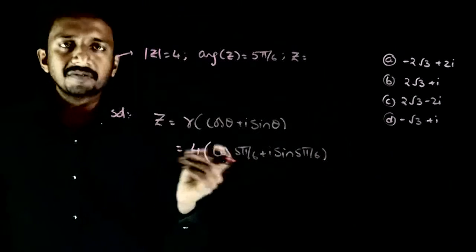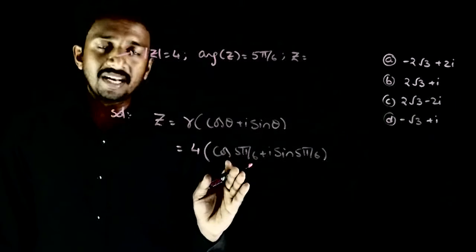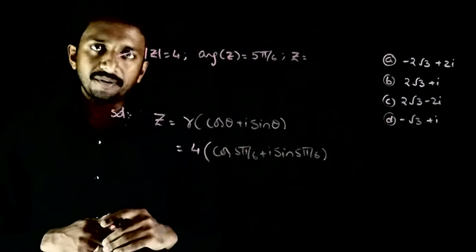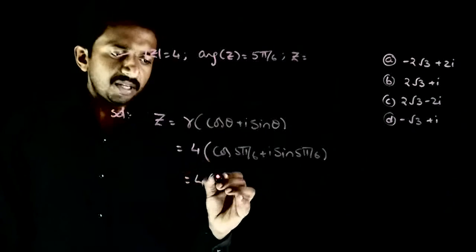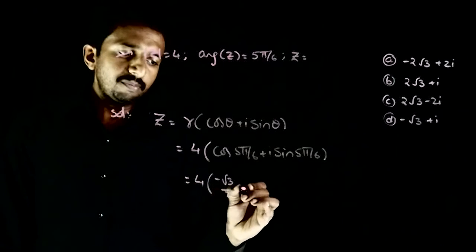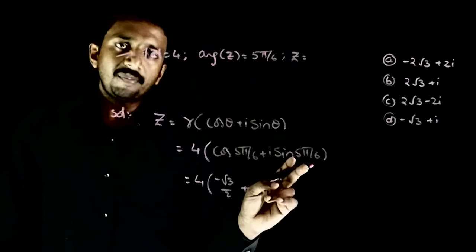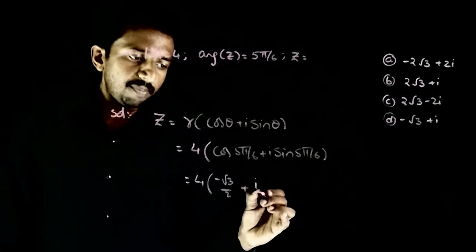Now cos 5π by 6... 5π by 6 lies in second quadrant, cos will be negative. This is minus cos π by 6 equals 4 into minus root 3 by 2, plus sin 5π by 6 is positive, so i by 2.